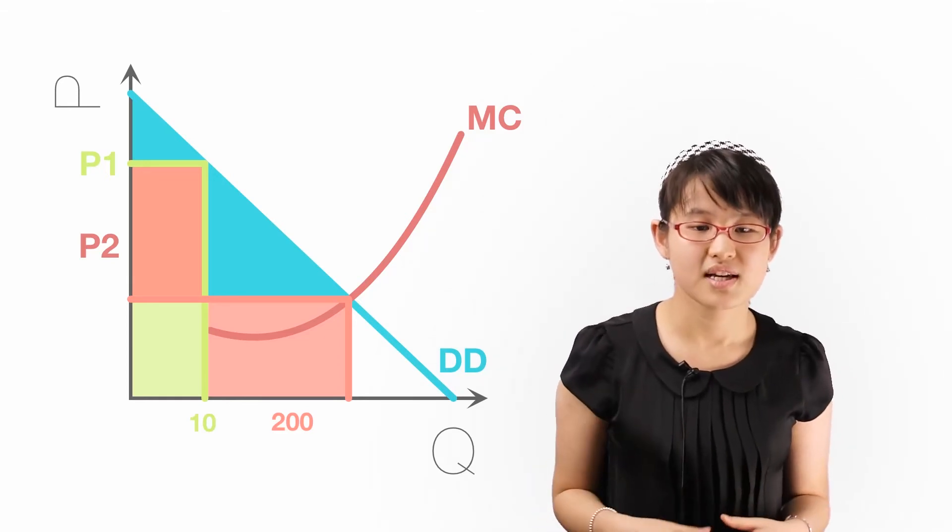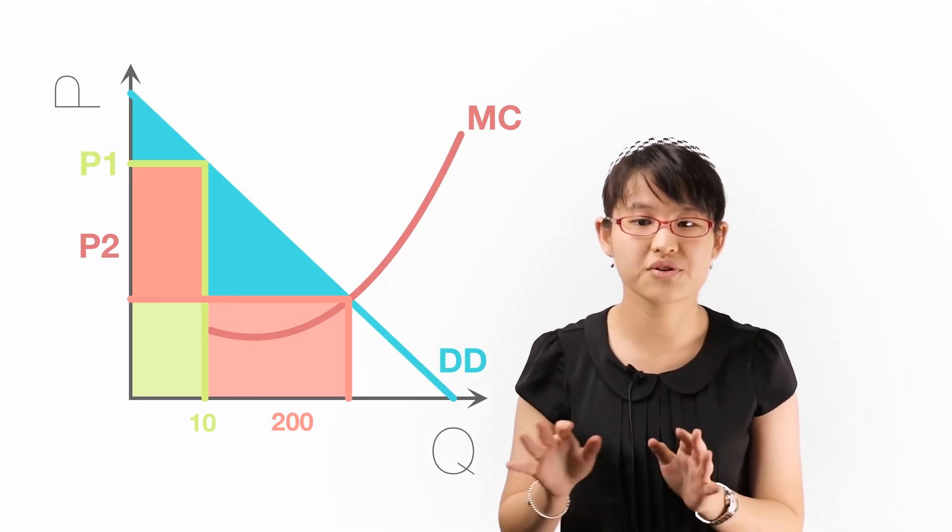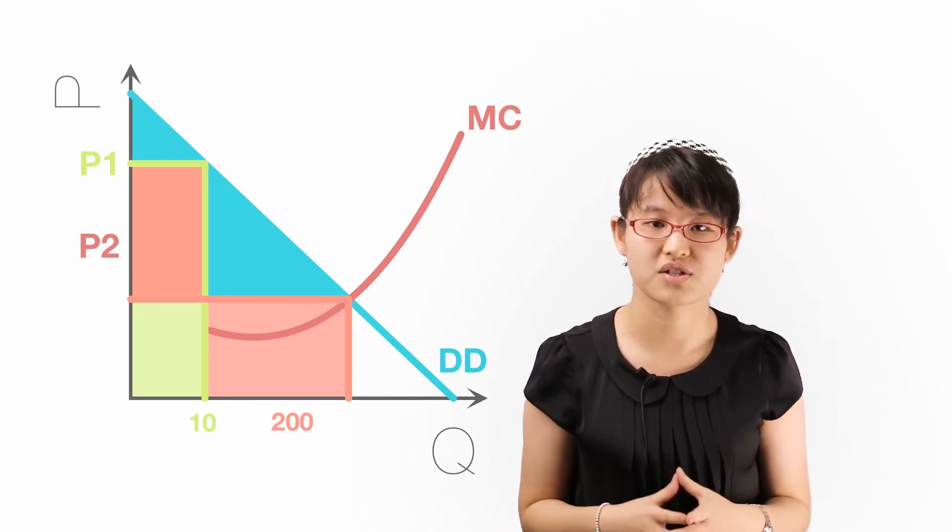The ultimate purpose is to allow the supplier to set different prices to the different groups and capture a larger portion of the total market surplus.